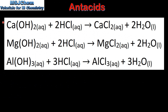Next we look at the equations of the metal hydroxides with hydrochloric acid. The first equation is calcium hydroxide reacting with hydrochloric acid to form calcium chloride and water. The second equation is magnesium hydroxide reacting with hydrochloric acid to form magnesium chloride and water.